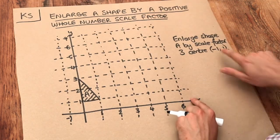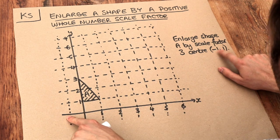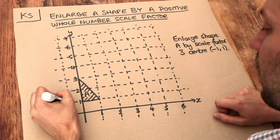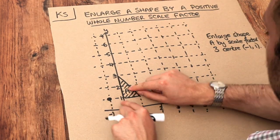So we've got minus 1, 1. Minus 1 is the x value, so along the x axis minus 1, y value is 1 which is here. So we're going to plot that point and we want to enlarge this shape by scale factor of three about this point.